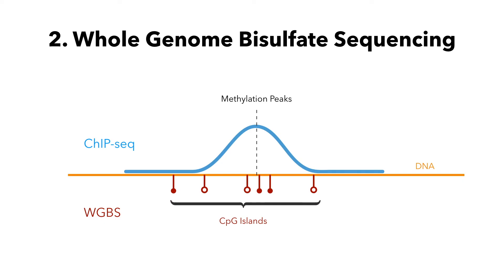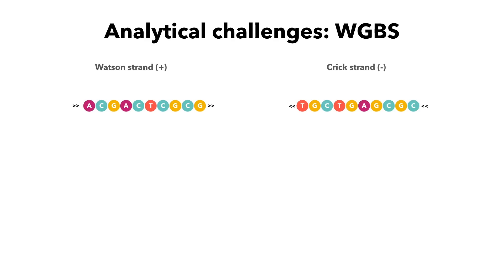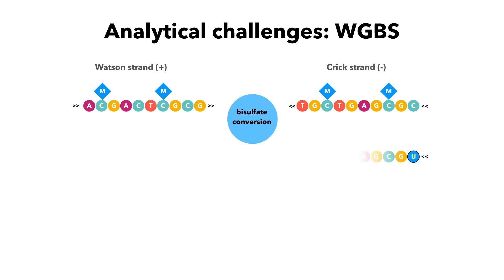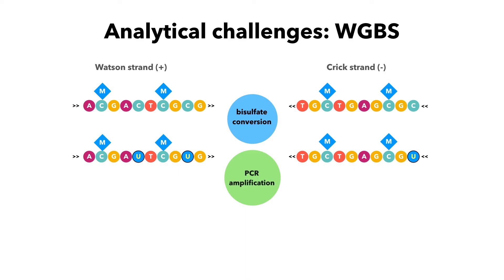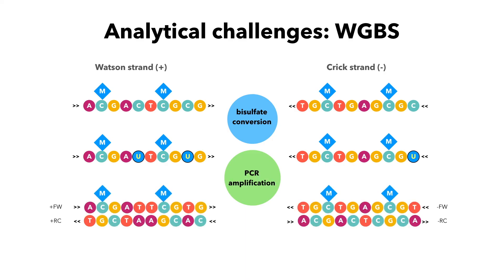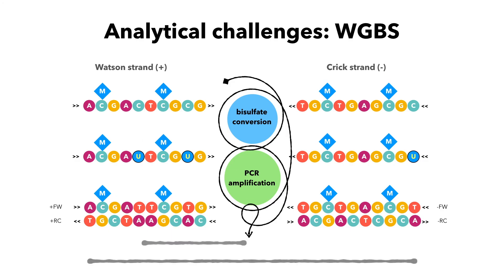DNA methylation has to be studied using a different method called bisulfite sequencing. This method looks for methylated cytosines across the whole DNA. One of the major challenges in analyzing whole genome bisulfite sequencing data is related to the library preparation step. Cytosines on both strands of the DNA can be methylated. When the strands are separated, bisulfite conversion changes the non-methylated cytosines to uracil. Methyl groups protect the methylated cytosines so they are not affected. During the subsequent PCR amplification step, uracil that appears from bisulfite conversion will be transformed into thymine.